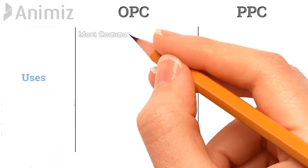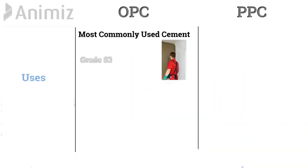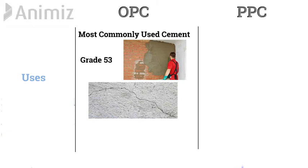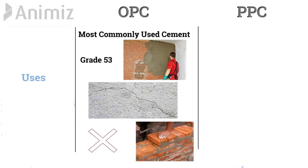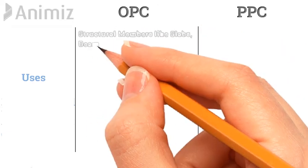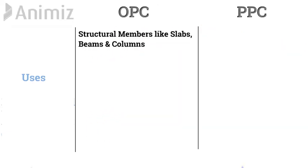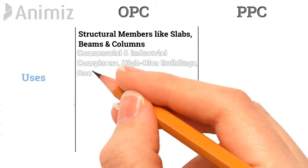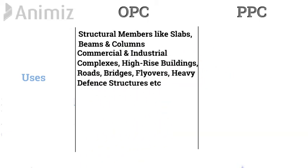OPC is the most commonly used cement in construction. Higher grades like 53 are not recommended for plastering as they are known to develop shrinkage cracks. Due to its high strength, OPC is also not used in masonry, as mortar strength in the initial period is not critical. OPC can be used for structural members like slabs, beams, and columns. Ideal applications for OPC are commercial and industrial complexes, high-rise buildings, roads, bridges, flyovers, and heavy defense structures.